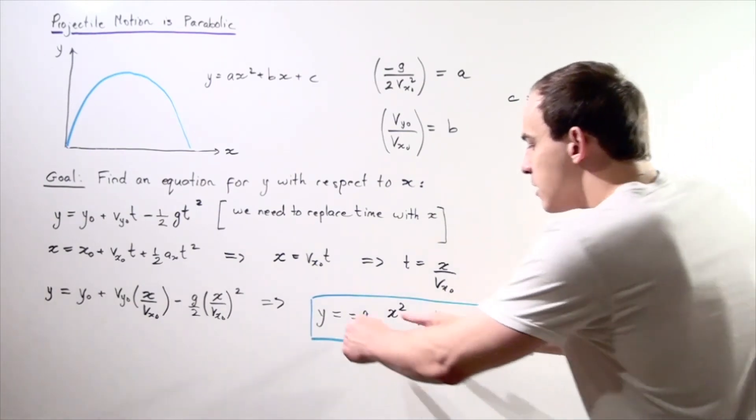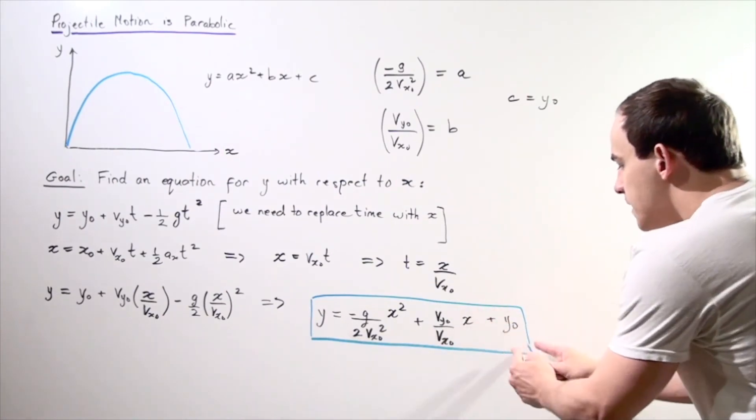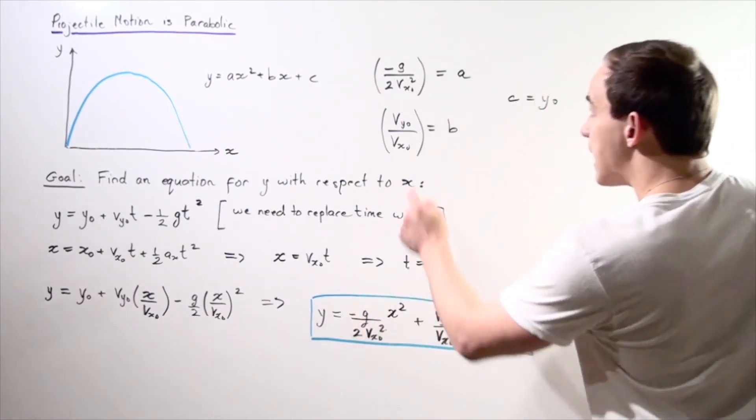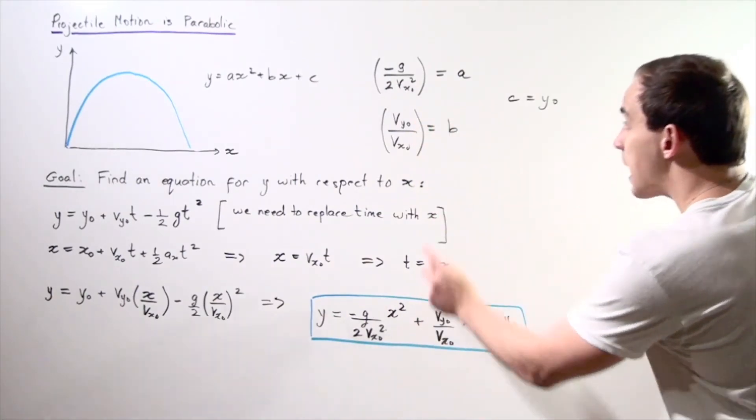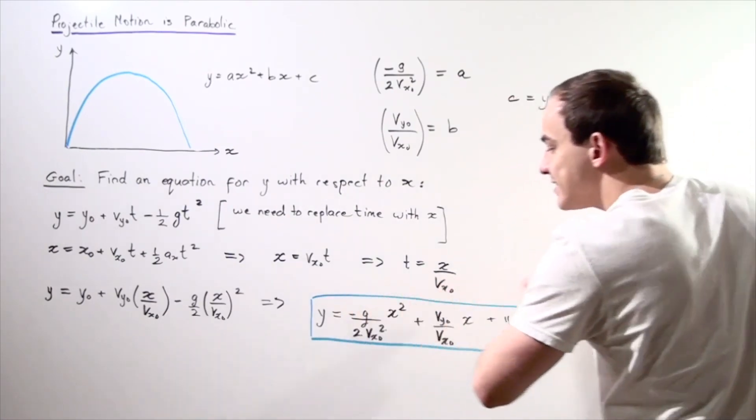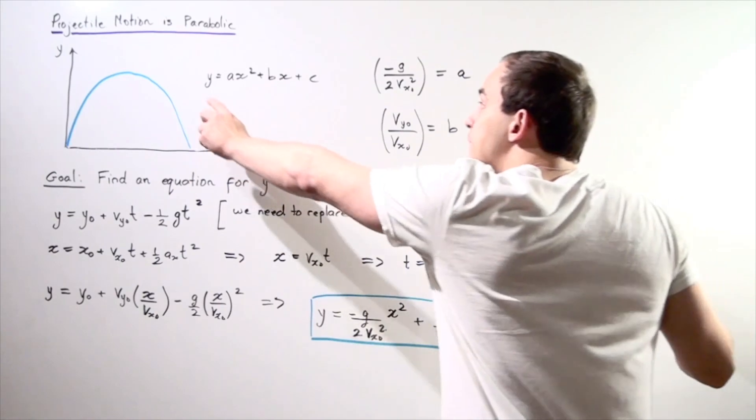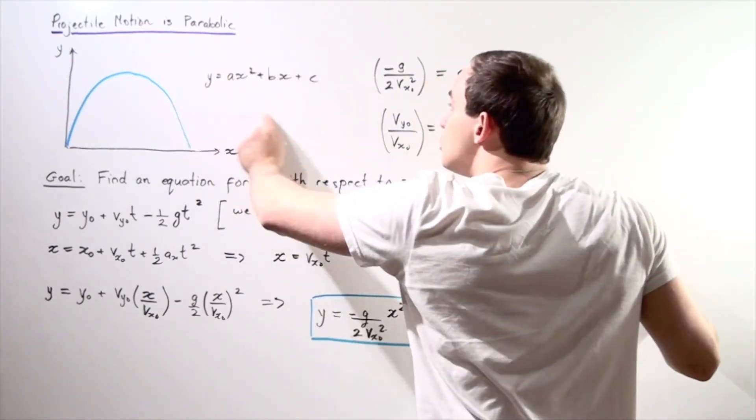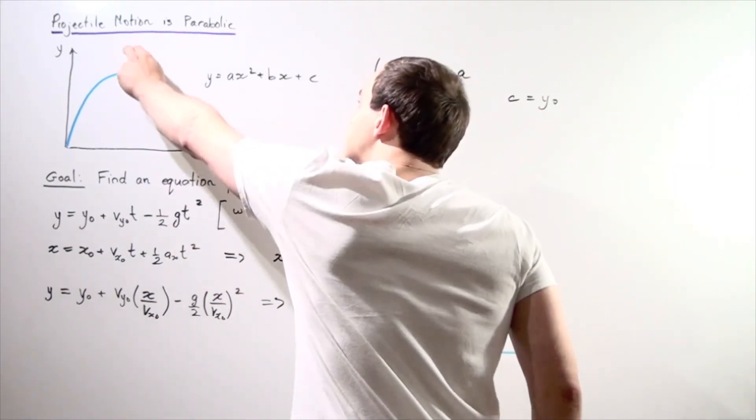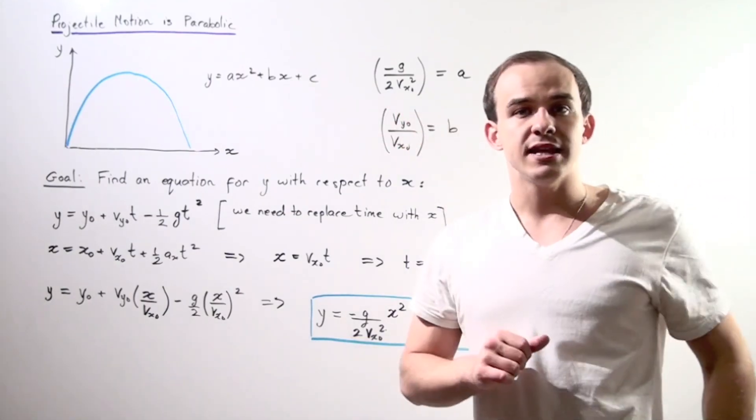So notice that this term is a constant, this term is a constant, and this term is a constant. So in fact, this is our a term, this is our b term, and this is our c term, and this equation is exactly identical—has the same exact form as the following quadratic equation. And that means that projectile motion is in fact parabolic, as the claim initially stated.